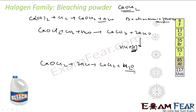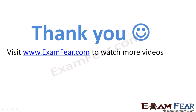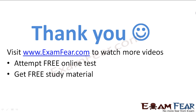The uses of bleaching powder: it is used to manufacture chloroform; it is used as a bleaching agent to bleach wood pulp, cotton, etc.; it is used for disinfecting lavatories, drainage, etc.; and it is used for sterilizing drinking water. Thank you — visit examfear.com to watch more videos, attempt free online tests, get pre-study materials, and find tutors and mentors.